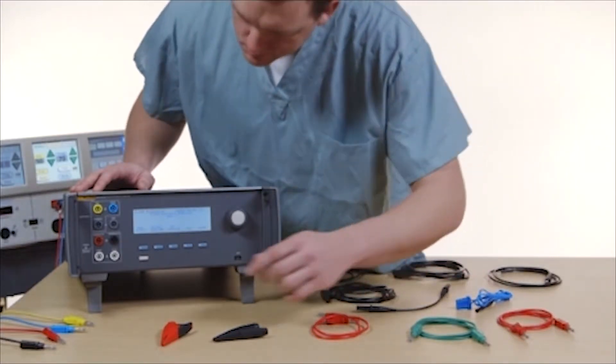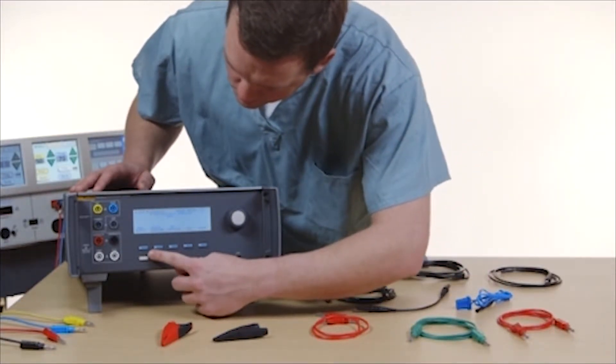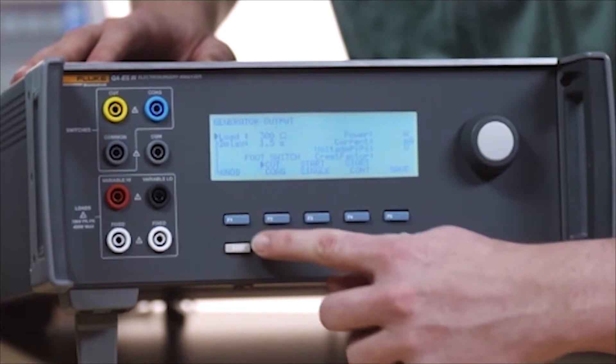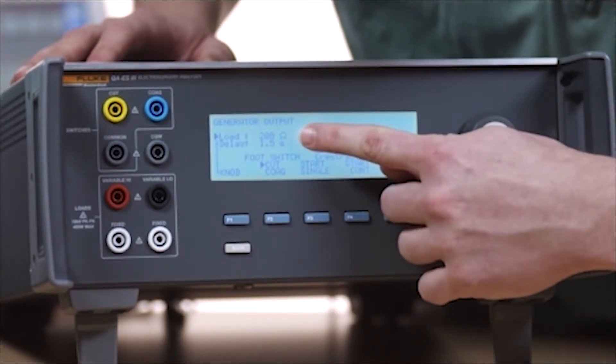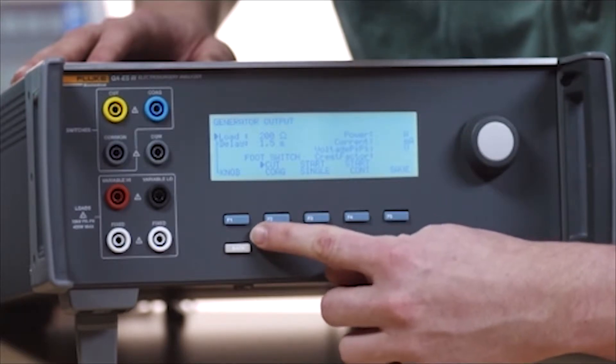To perform a generator output test in monopolar mode, push F1 from the menu. Turn the rotary knob to set the load resistance. 200 ohms is recommended.